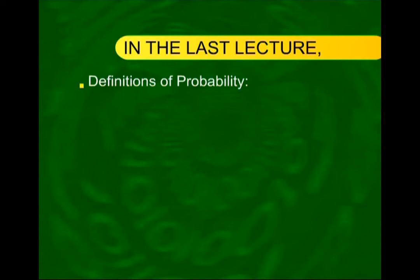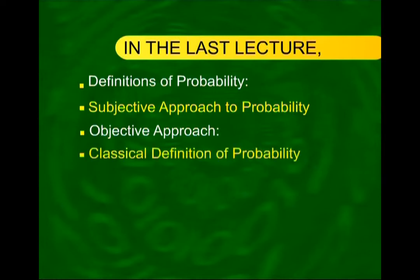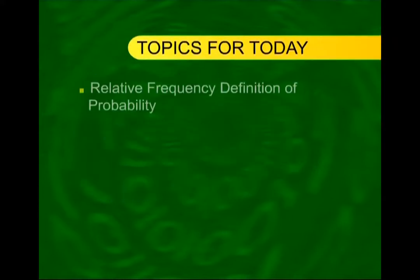Assalamu Alaikum, welcome to lecture number 19 of the course on statistics and probability. In the last lecture I discussed various approaches to probability — the subjective approach and the objective approach. Under the objective approach I discussed the classical definition of probability and touched upon the relative frequency definition, which is the very important definition from the statistical point of view. Today I will discuss this definition in a little more detail.